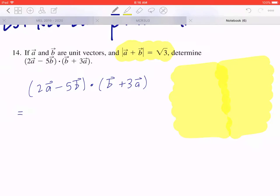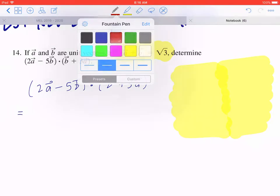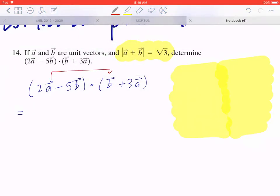Now if you go back to the first column, again I'm going to draw some arrows, I'm expanding this. So there are four parts I need to think about. The first part is going to be 2a · b. The second part is going to be 2 times 3, that's going to give you 6a · a.